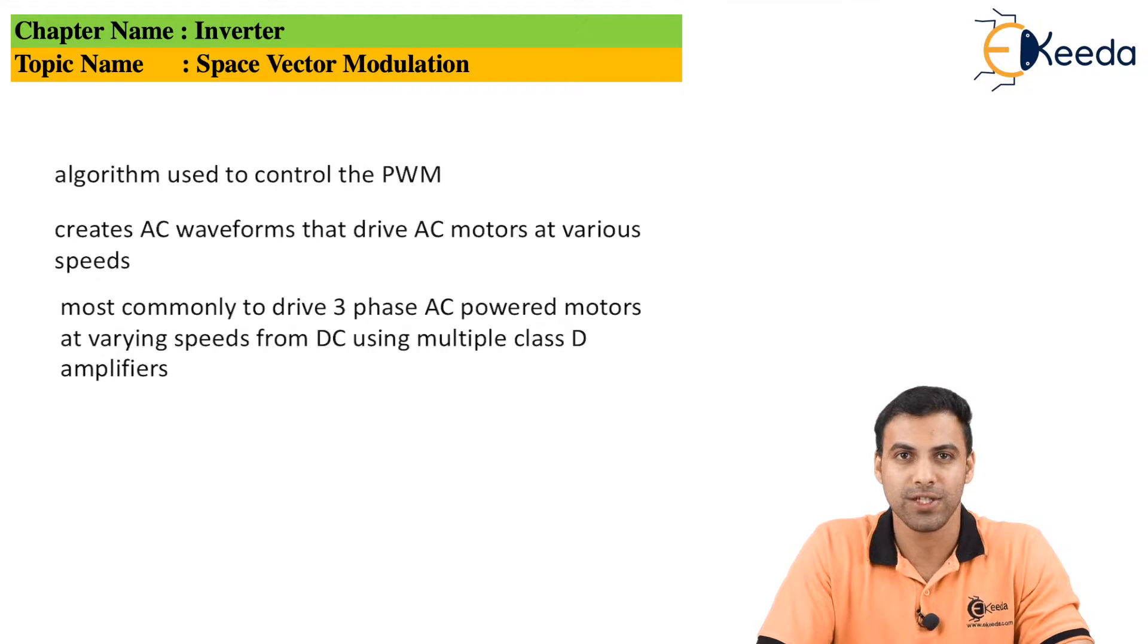Just to revise, the PWM technique is a technique where we can control any switching device so that we can vary the output voltage depending on the pulses. It has an on time and off time. We can increase the on time or decrease the off time and vice versa so that output voltage can be controlled. Through a PWM converter we can allow the switching device to remain on as per our need and desire.